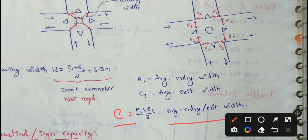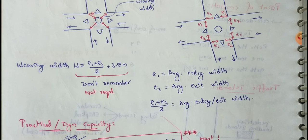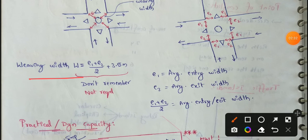E value is incorporated. So E value is the final method of weaving width. We have to prove it is W. W equal to E1 plus E2 by 2 plus 3.5 m. This is the formula for weaving width.